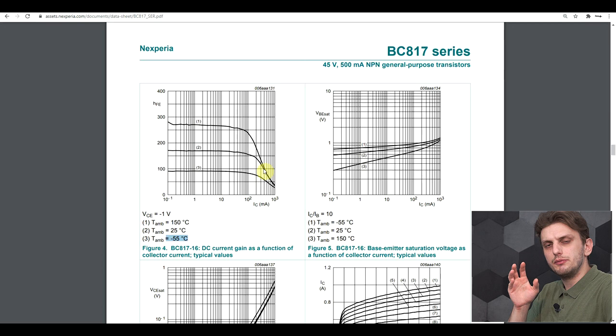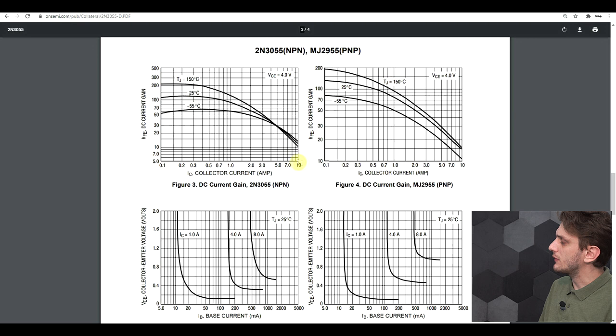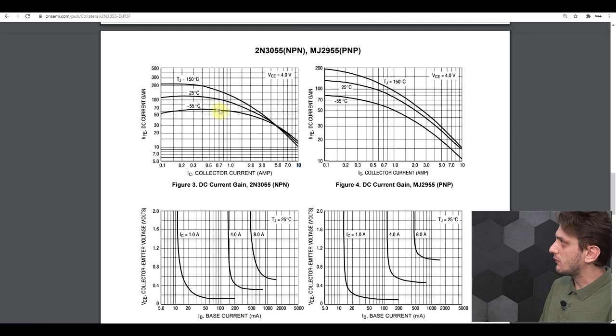But the story is not the same if we look at a higher current transistor. Now if we look at the not-so-modern 2N3055 we can see that its gain, especially when getting up to really high currents, I mean this is a transistor that can handle 15 amps of collector current but the graph only goes up to 10.